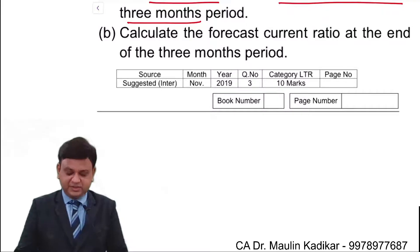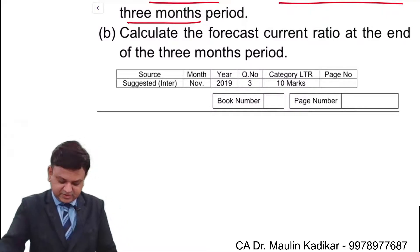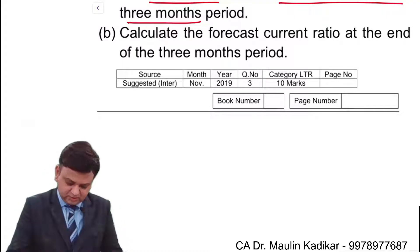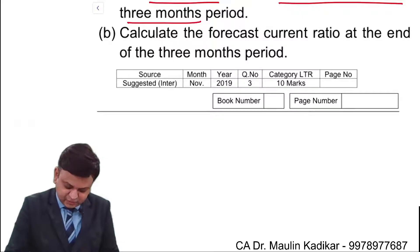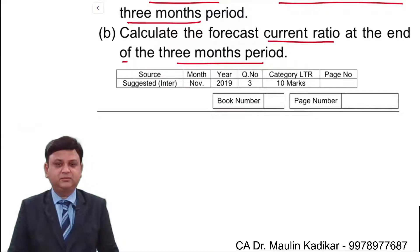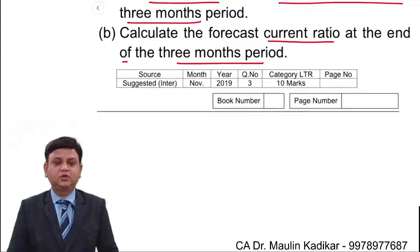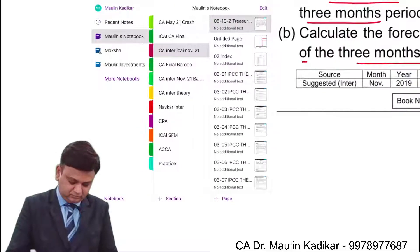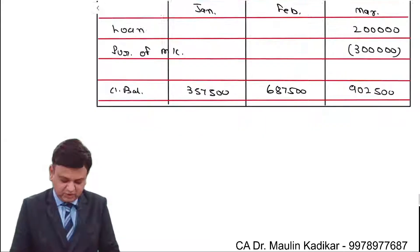The second part of the question asks us to forecast the current ratio at the end of the 3-month period. So we need to calculate: what will the current ratio be?